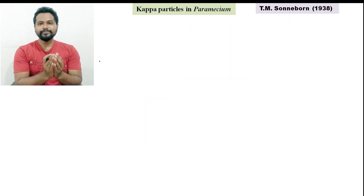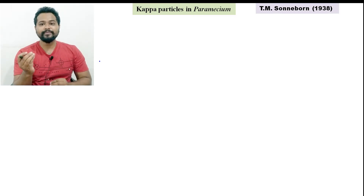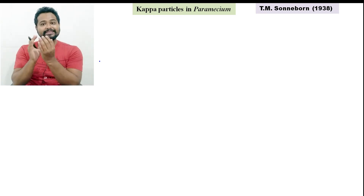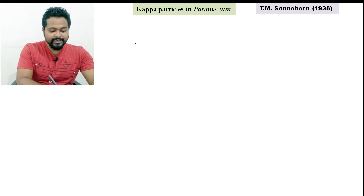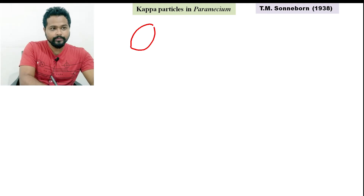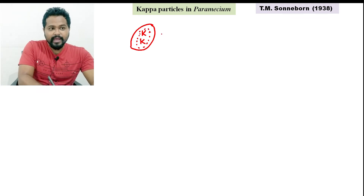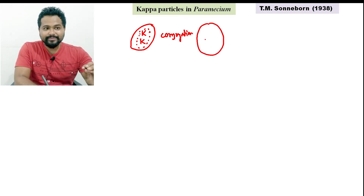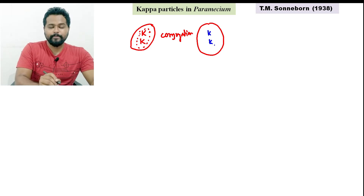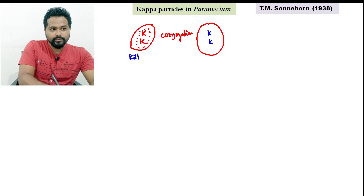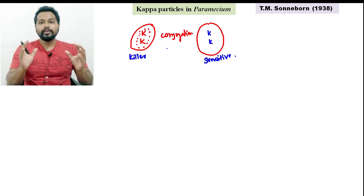I will tell you that these kappa particles are transferred to this Paramecium. This is a transfer — either to a sensitive strain or a killer strain. This is a sensitive strain with small k, small k. This is a killer strain and this is a sensitive strain.